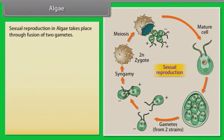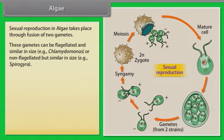Sexual reproduction in algae takes place through fusion of two gametes. These gametes can be flagellated and similar in size. Example: Chlamydomonas. Or non-flagellated but similar in size. Example: Spirogyra. Such reproduction is called isogamous.